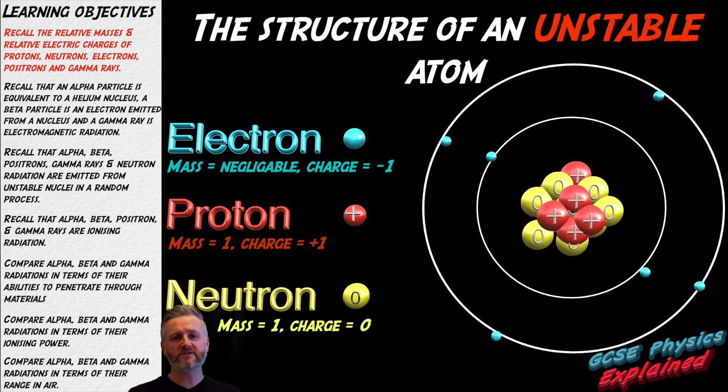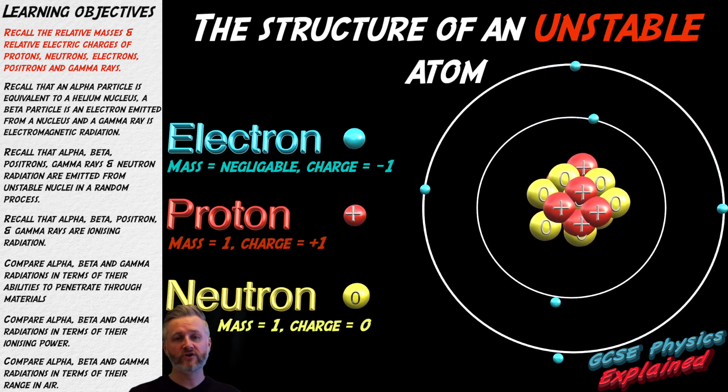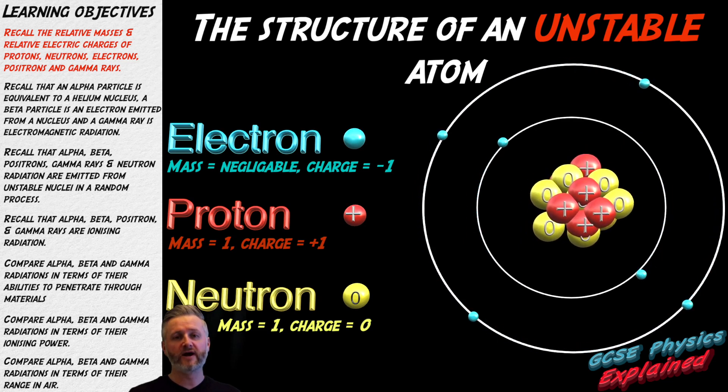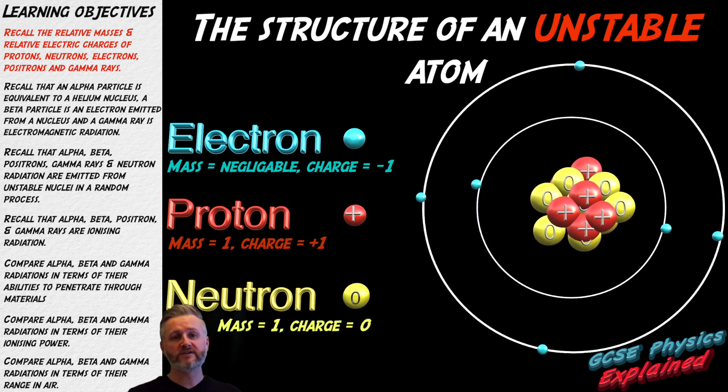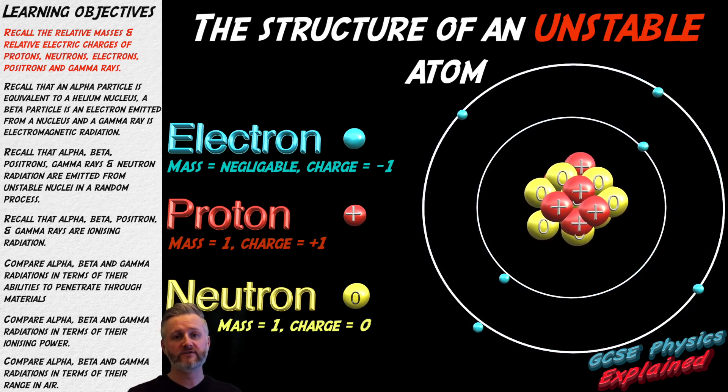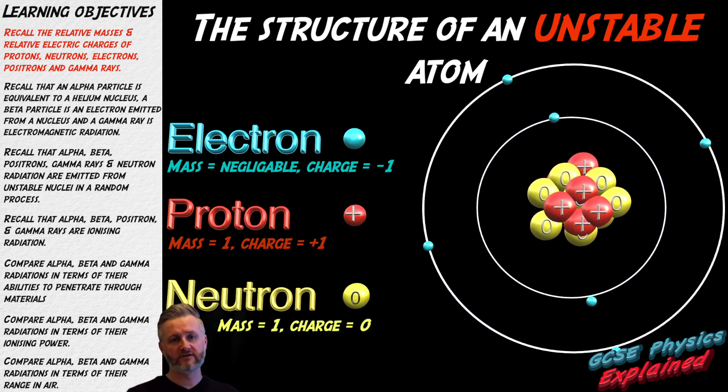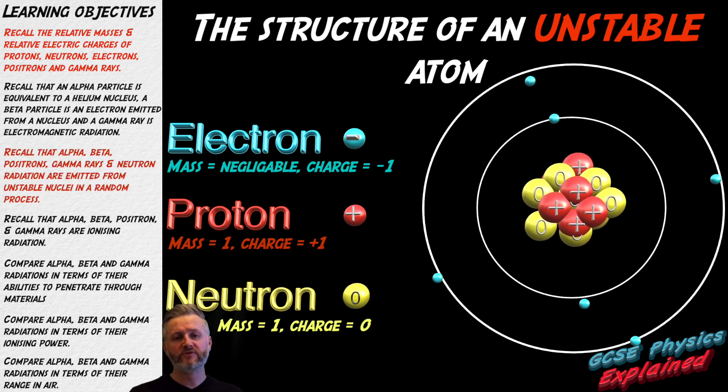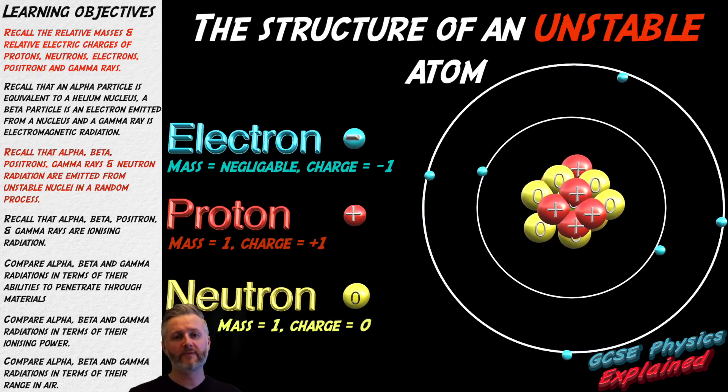The nucleus of some atoms are unstable because additional neutrons have joined the nucleus. These unstable atoms are called radioactive isotopes. An isotope is an atom with the same number of protons but a different number of neutrons. The nucleus of a radioisotope gives out radiation as it becomes stable. This is a random process called radioactive decay because you cannot predict when the decay will happen.